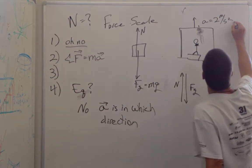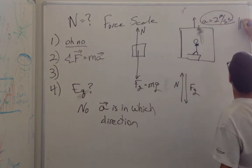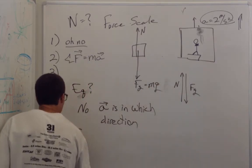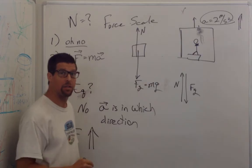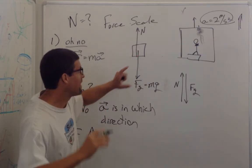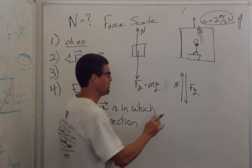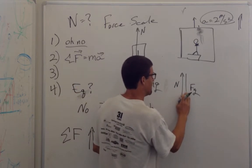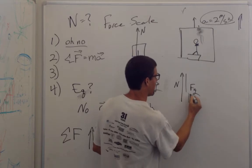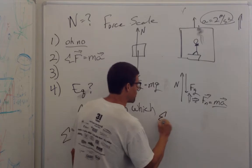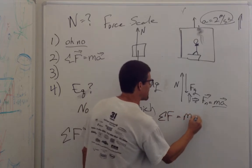And so I look at the acceleration is in this direction, so that I know the vector sum of the forces must be pointing in this direction. And now I can make my vector diagram adding them so that the net force is upwards.